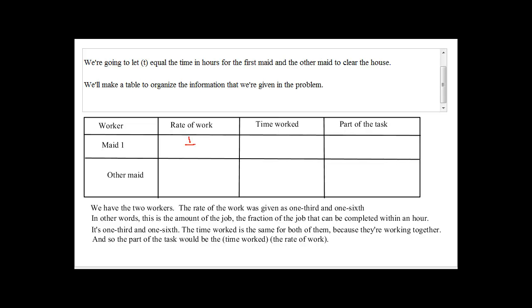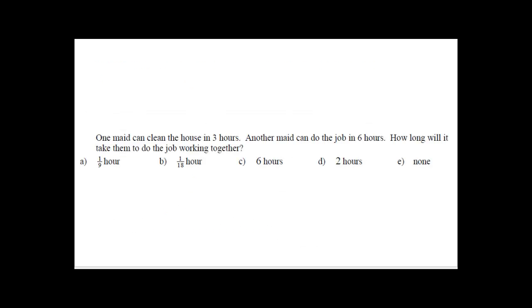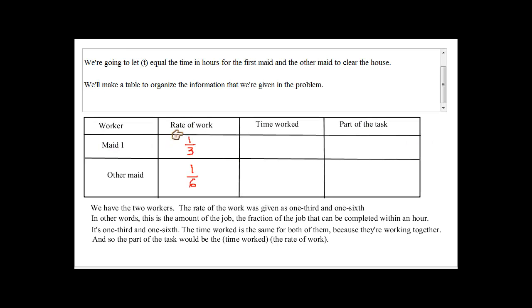So the rate for the first worker here is one over three. Ryan, what would be the rate for the second maid here? One-sixth. Very good. So the rate for the second maid is one-sixth. Remember the question here again. It says one maid can clean the house in three hours and the other maid can clean the house in six hours. If I come back in one hour, the first maid should be done with one-third of the job and the second worker here will be done with one-sixth of the job. That's the rate of the worker.